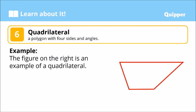Quadrilateral. A quadrilateral is a polygon with four sides and four angles. One, two, three, four sides — and four angles: one, two, three, four. So, this is a quadrilateral.